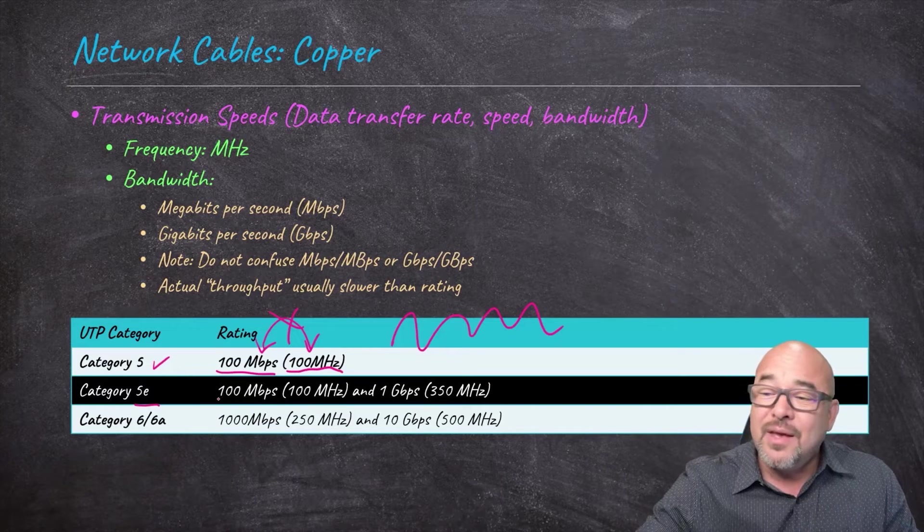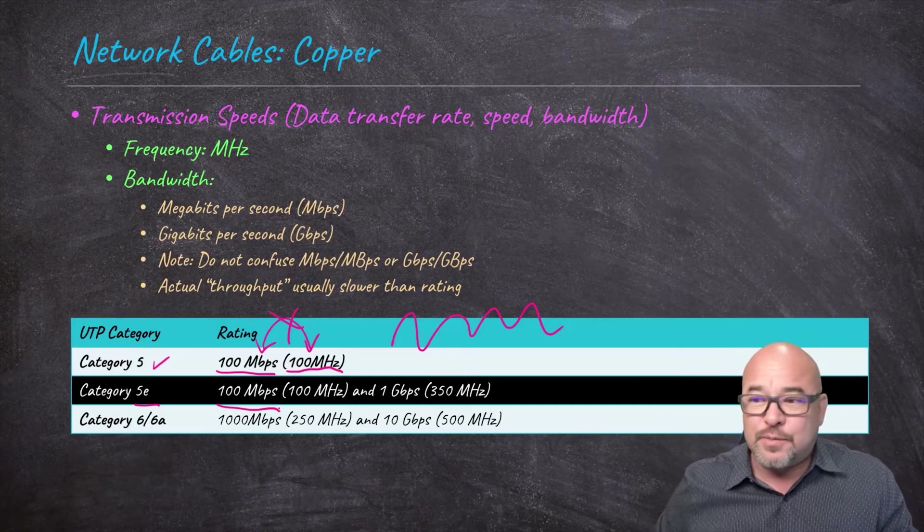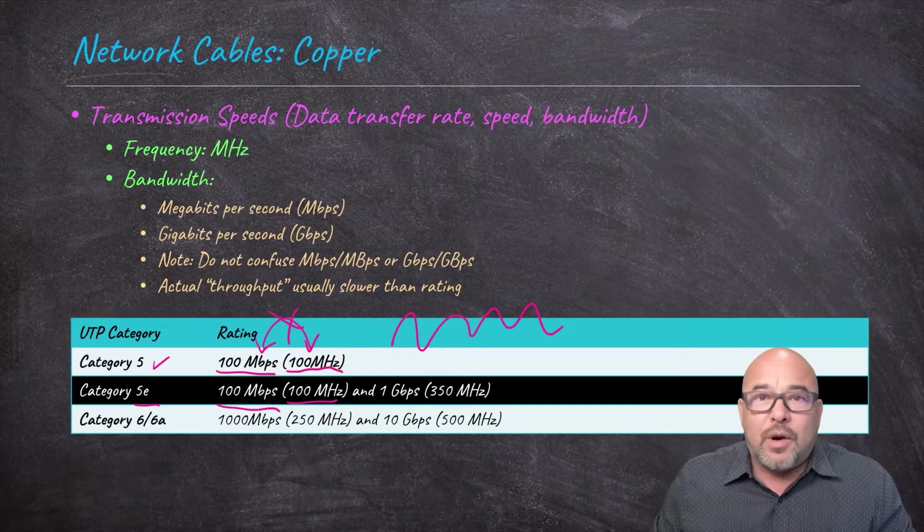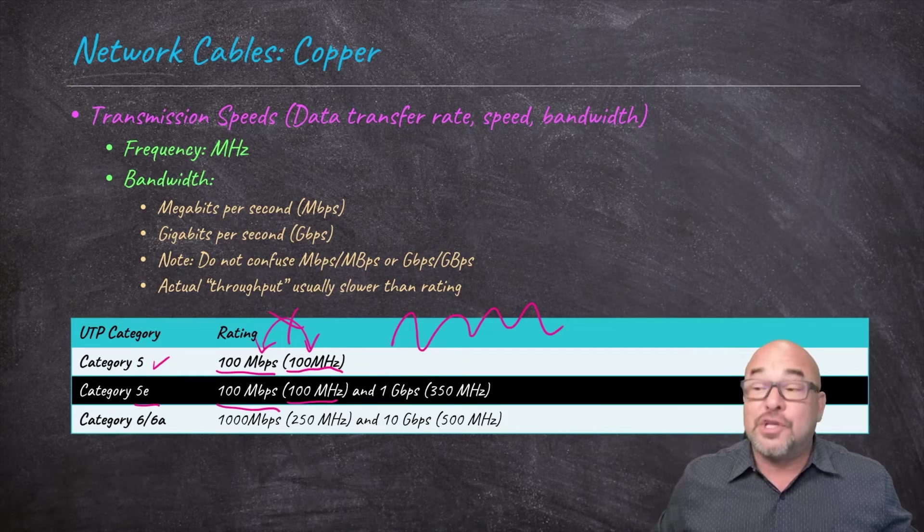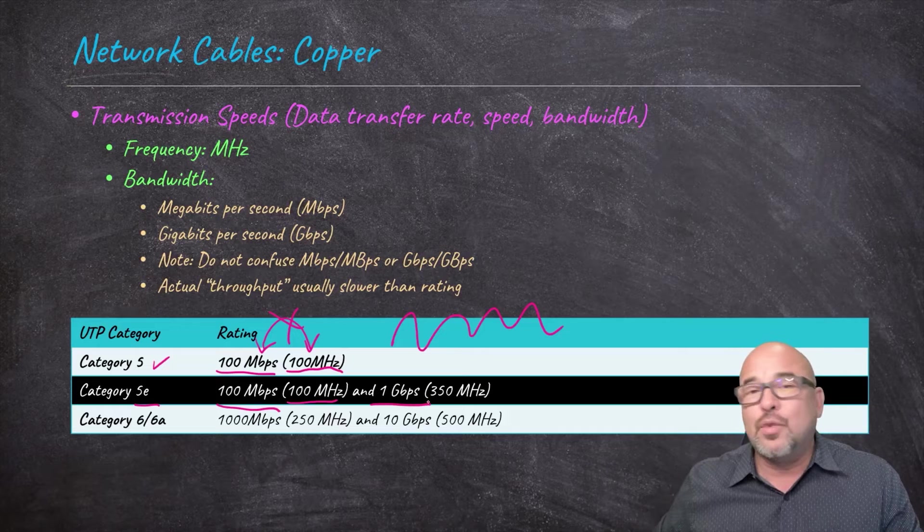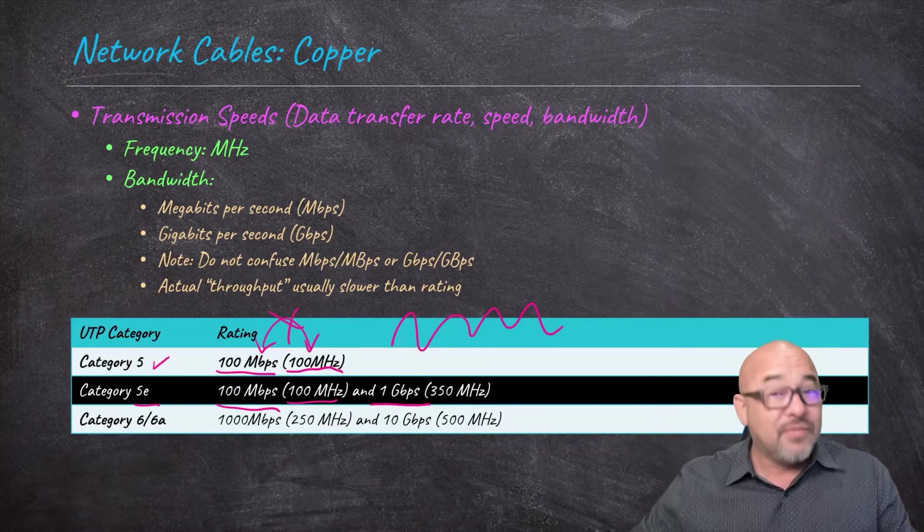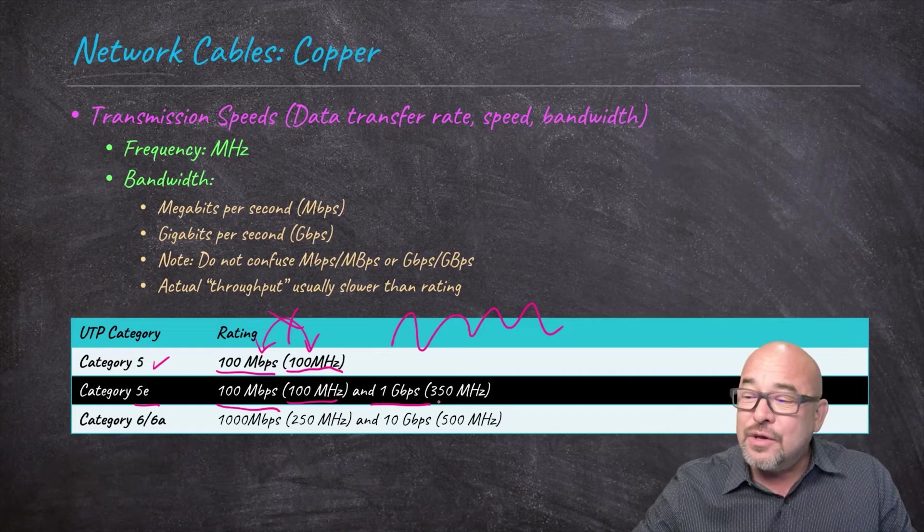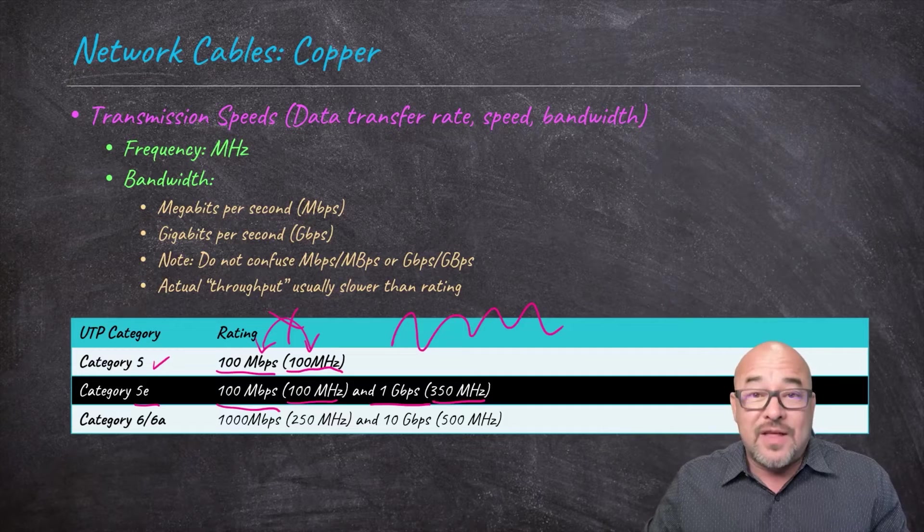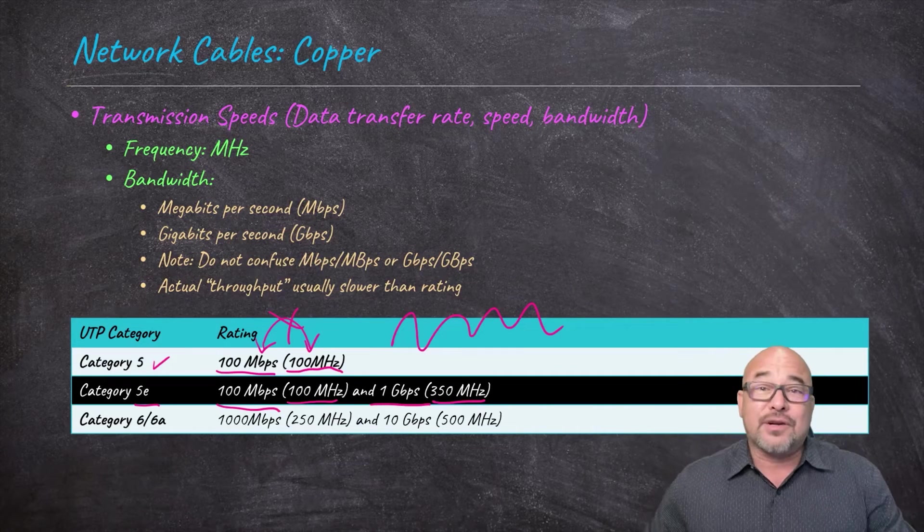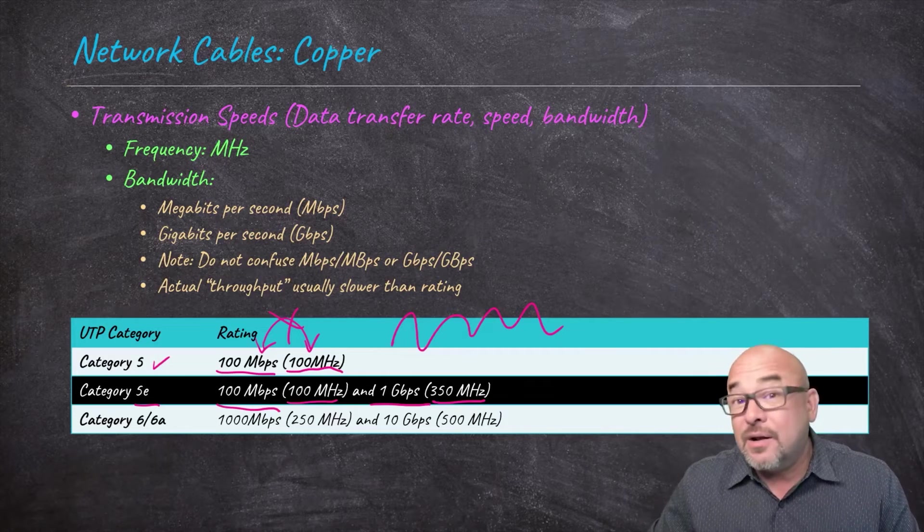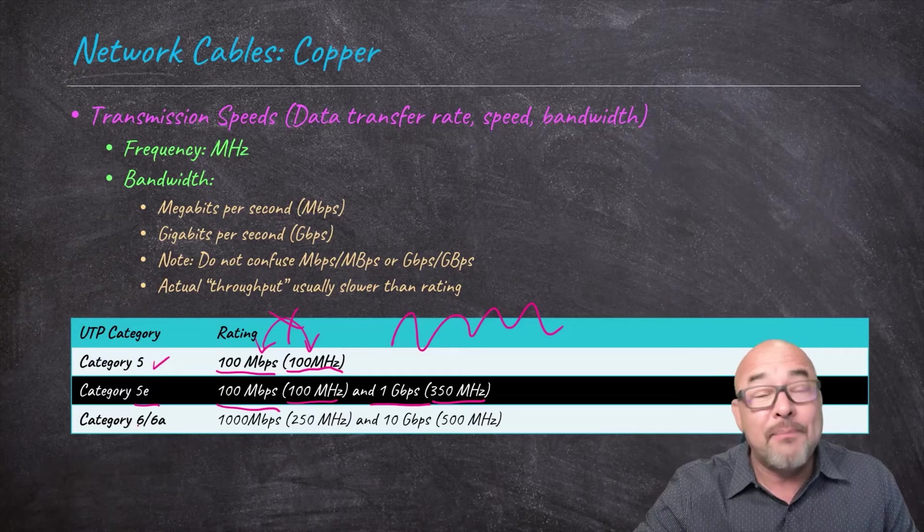It operates at 100 megahertz. Remember this? It gives us 100 megahertz per second. And that's part of how it's able to achieve the 100 megabits per second. Now it's not a one-to-one relationship here. That's not megahertz equals megabytes. However, the more megahertz you can get, the faster you can go. So here with Cat5E, which was an improvement on Cat5, we had still 100 megabits per second at 100 megahertz.